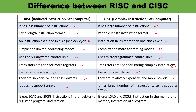RISC does not support arrays, but CISC supports arrays because it has a large number of instructions. In terms of load and store instructions, register-to-register interactions are used in RISC, while in CISC it is memory-to-memory instructions. So the kind of action is register-to-register in RISC, and memory-to-memory in CISC.